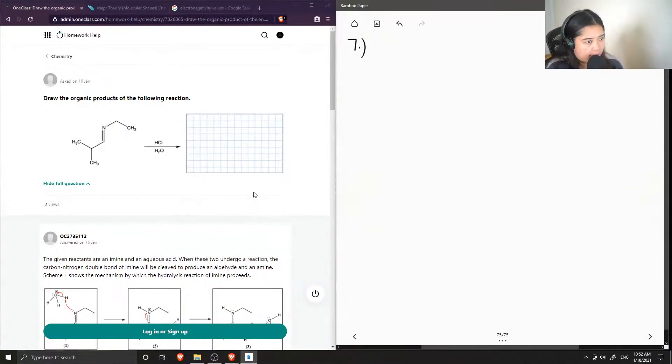So we have this compound, let me draw the full compound. So there is a double bond to a nitrogen.